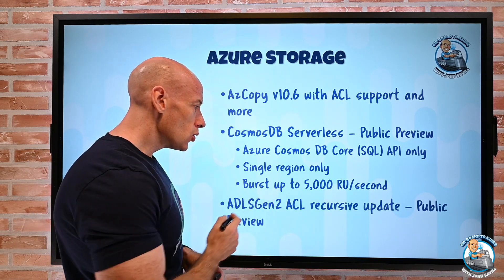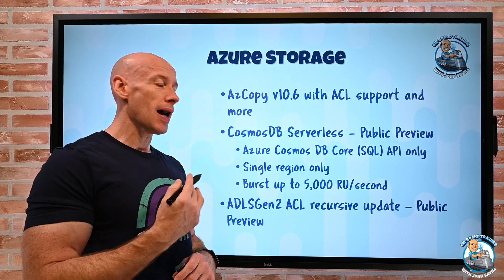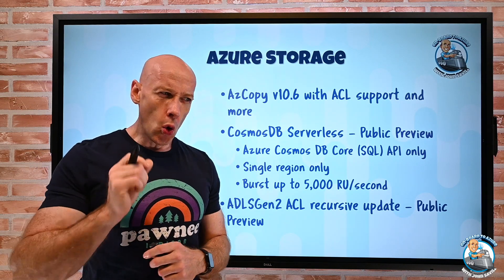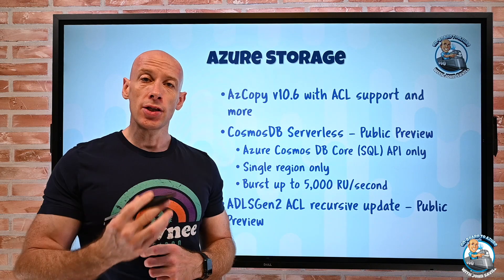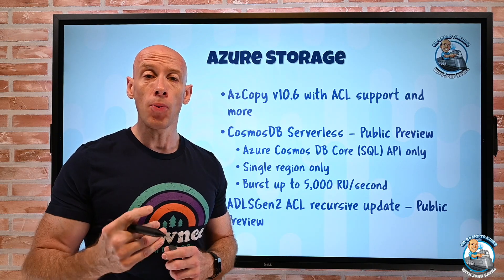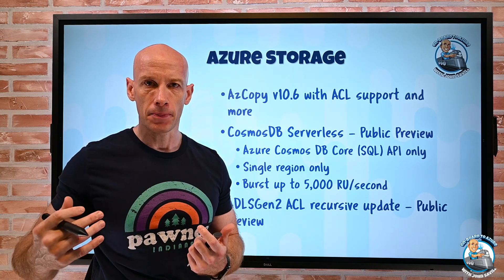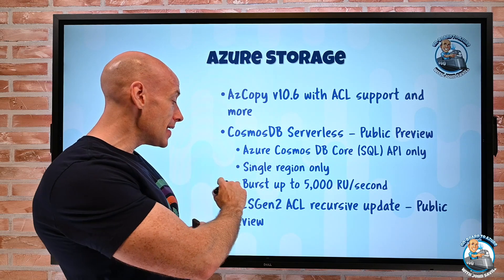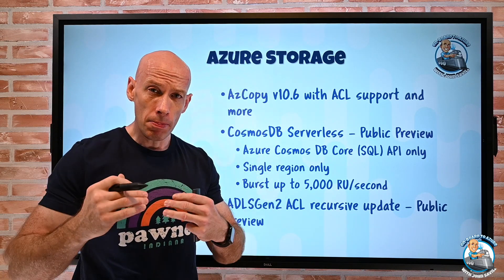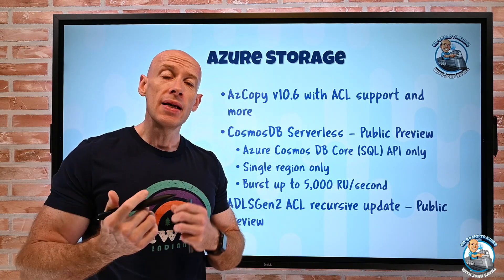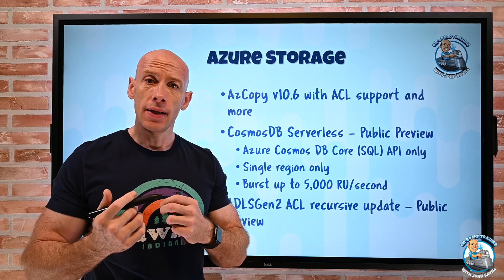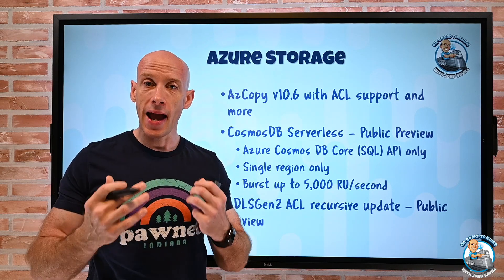ADLS Gen 2 ACL recursion update, that is in public preview. So ordinarily, so ADLS Gen 2 sits on top of Blob. Blob ordinarily has no structure. What this ADLS does, it sits on top of Blob, another API, and it's a POSIX style file system. I can have ACLs.